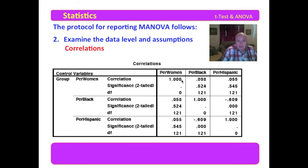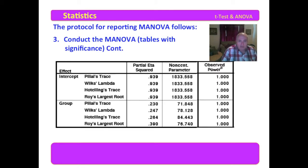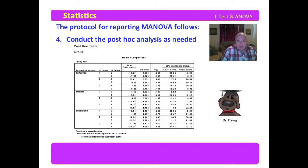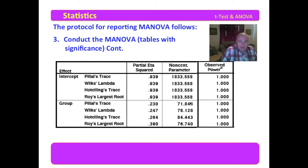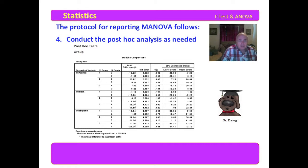Then you report on your correlations. Here we have the correlations of each variable to the other, so you can look at that and report on it. You conduct the MANOVA — here I have it in two pieces: the first half where we have significance, and then continued where we have the partial eta squared and all of those other issues. Conduct the post hoc analysis as needed because the differences are significant by group. We generally report on Wilks' Lambda, which shows us that we have very significant differences in the data set, so you would report on the post hoc analysis. If it had not been significant, the post hoc analysis would have been meaningless.